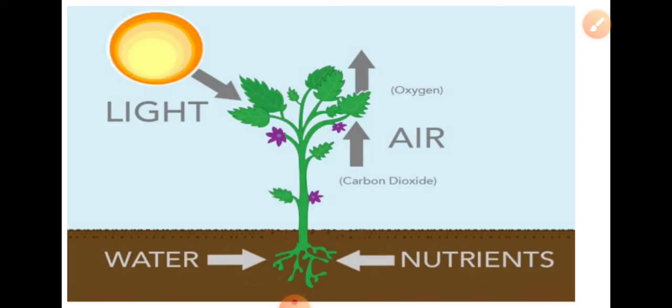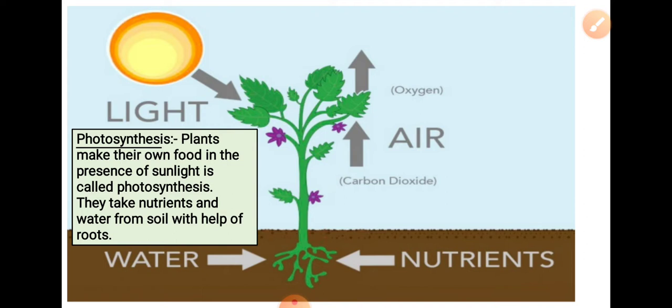Here you can see the roots absorb water and nutrients from the soil with the help of roots. Leaves take sunlight from the sun and make their food. This process is called photosynthesis. Plants make their own food in the presence of sunlight — they take nutrients and water from soil with the help of roots.